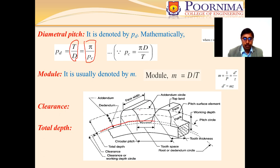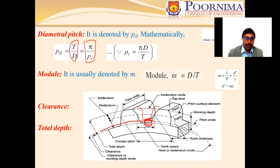Clearance is the space provided so that when another tooth comes into mesh, there is enough clearance to eliminate interference. The total depth is the distance from the bottom to the top of the tooth.